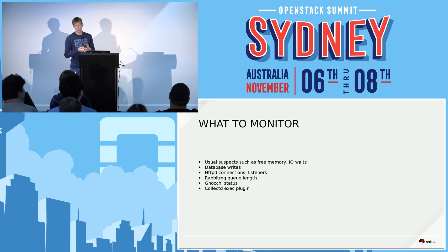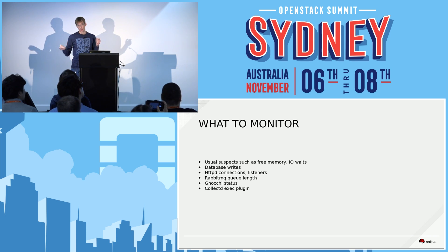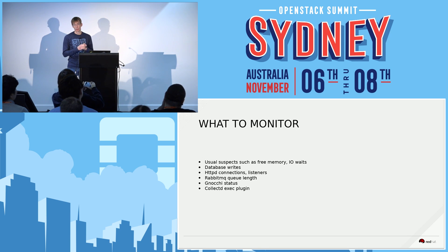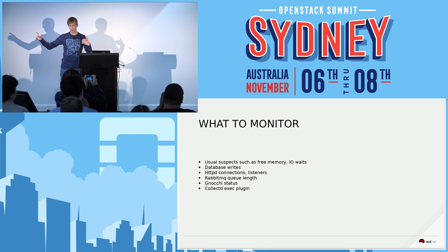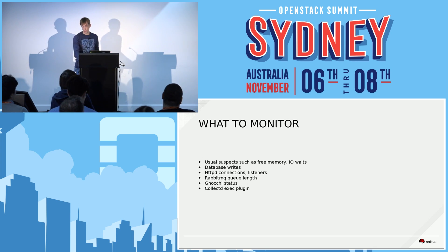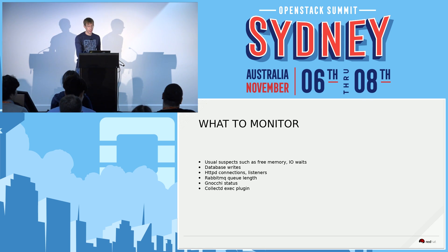If you're asking yourself what to monitor in your OpenStack environment — the usual suspects: free memory, IO wait, and so on. Database writes is always good. Since we're using so many HTTP connections, you could easily monitor your HTTP. RabbitMQ queue lengths — if your queues are growing, you have a problem. Having a look at Gnocchi stats is what I mentioned. And if you want to extend this, you could easily use the Collectd exec plugin to write shell scripts and append whatever you want.